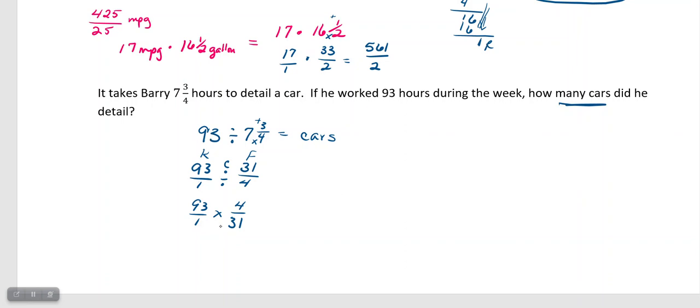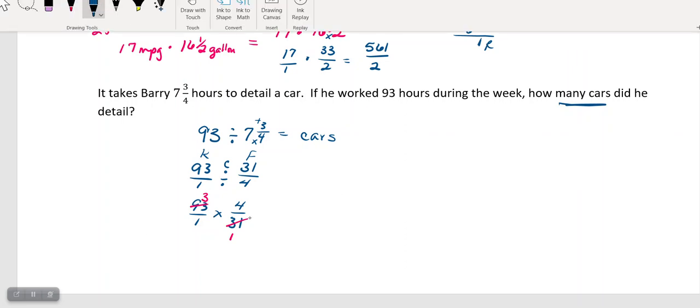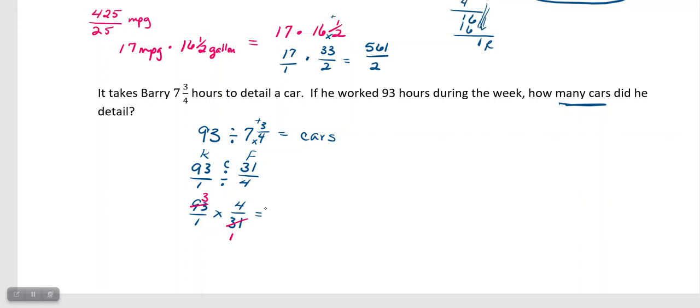So, if I look at my denominator 31, if I was to multiply it by 3, 3 times 1 is 3, 3 times 3 is 9, I'm going to get 93. So, I know 31 will go into 31 one time, and 31 will go into 93 three times. So, then, I have 3 times 4 over 1 times 1, so just 12 cars. He did 12 cars in that week.